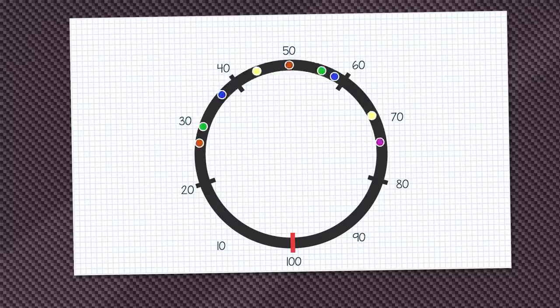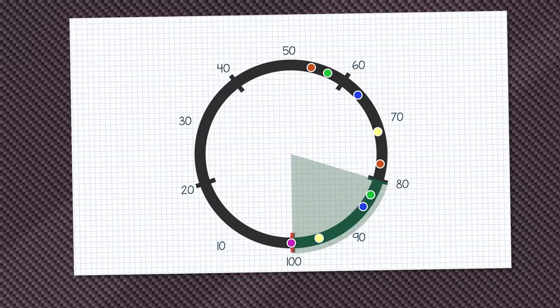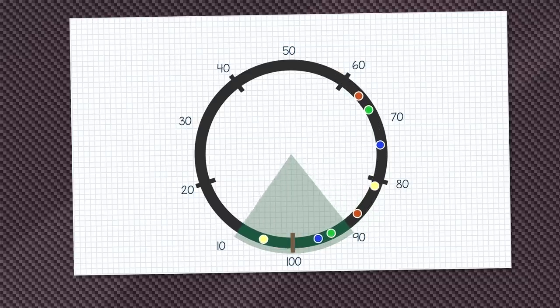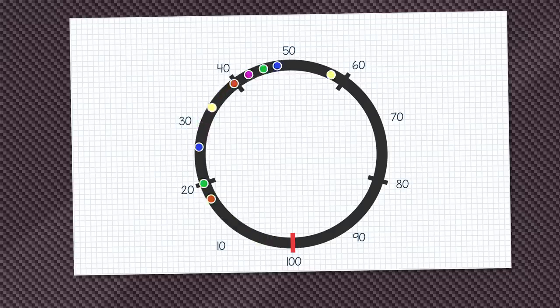So if the leading pink car pits, they will lose 20 seconds compared to all the cars that aren't pitting. So this is 20 seconds on our circuit. So all the cars inside this area will pass the pink car while it pits. That's a normal pit stop.